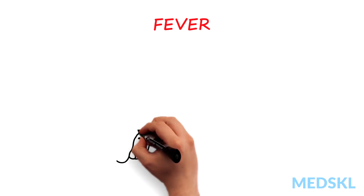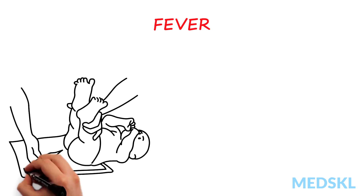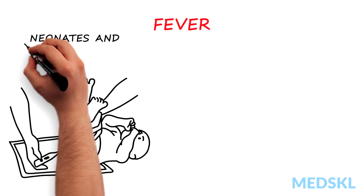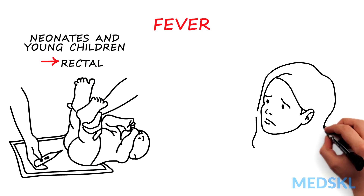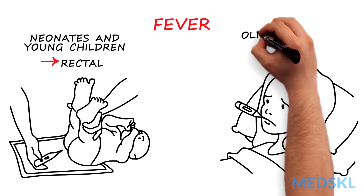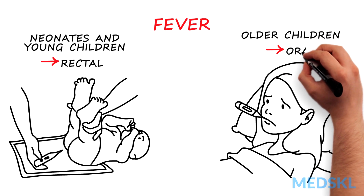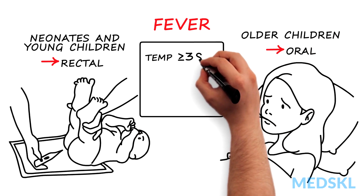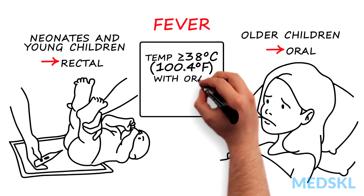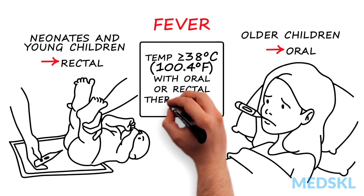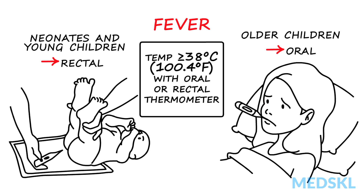Although there are various locations where a child's temperature can be measured, in neonates and young children a rectal measurement is most definitive, whereas an oral temperature is best in older children. A fever is generally defined as any temperature greater than or equal to 38 degrees Celsius, which is 100.4 degrees Fahrenheit, using an oral or rectal thermometer.